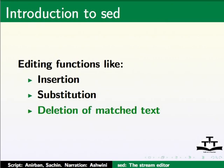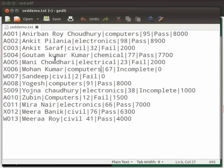Let us start with some examples. We will see how to print using the sed command. I have a file called sedemo.txt in the home directory. In this file, we have some entries like row number, name, stream, marks, pass or fail, and the stipend amount.